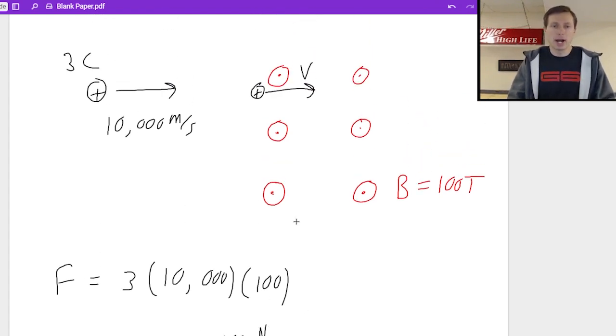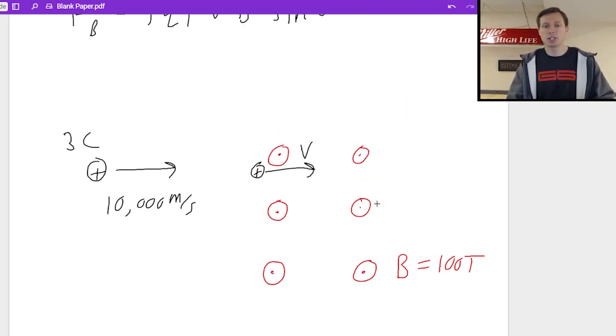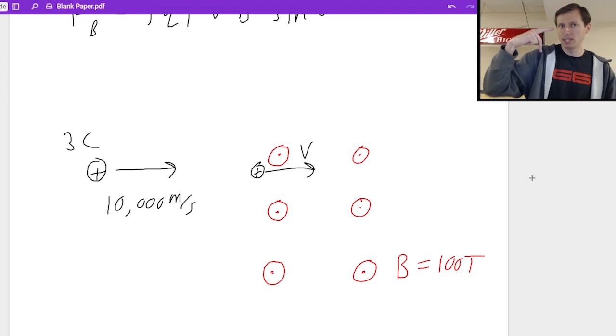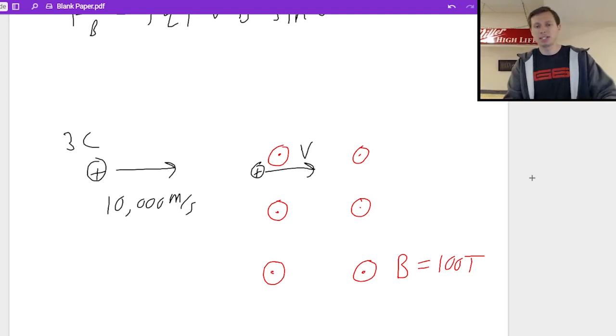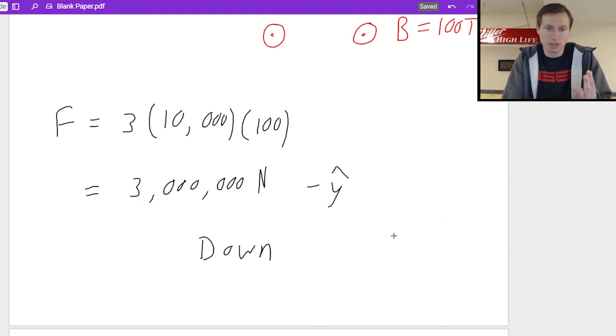But now what about the direction? Direction is equally an important question, not just the force. So if we want to find the direction, we got to go back to our right hand rule, which if we remember, thumb points in the direction of velocity, so to the right. Index finger points in the direction of our magnetic field, which is out of the page or towards us. And then you half extend your middle finger. I know you can't see it here, but my middle finger is pointing down right now. And because of that, the force is going to point downward. Or if you'd like to use x hat and y hat notation, we would say negative y hat. I'm okay with either way you say it.